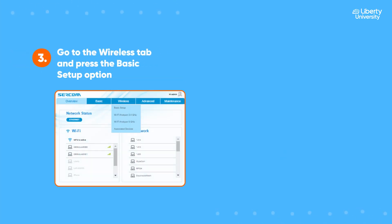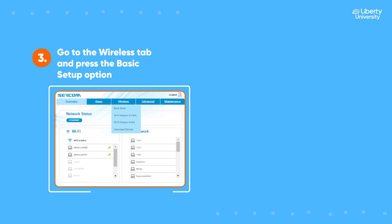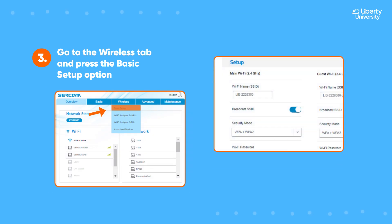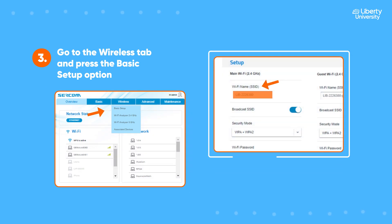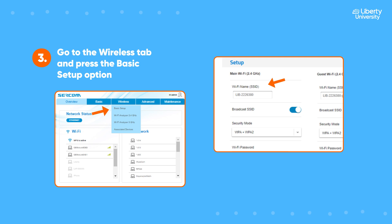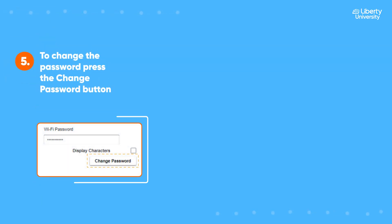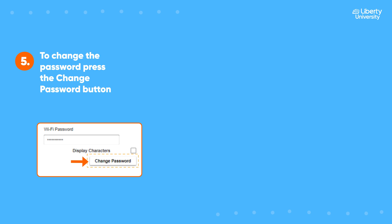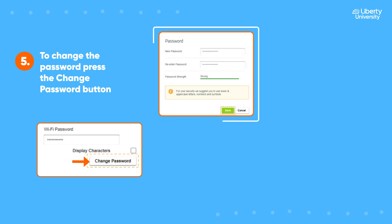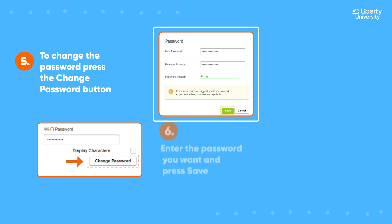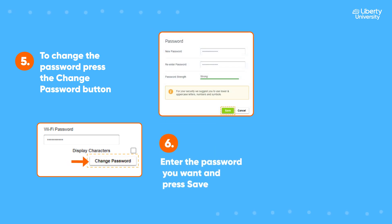Go to the Wireless tab and press the Basic Setup option. In the space below Wi-Fi Name SSID, enter the name you want to use for the network. To change the password, press the Change Password button. This window will open — enter the password you want and press Save.